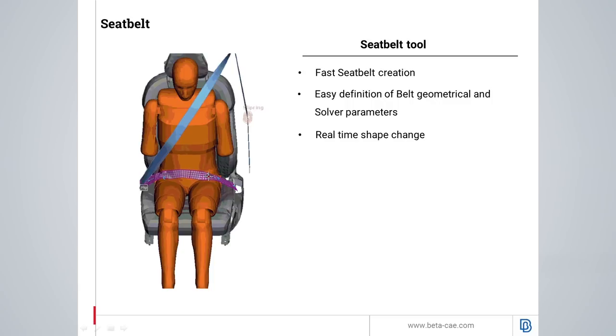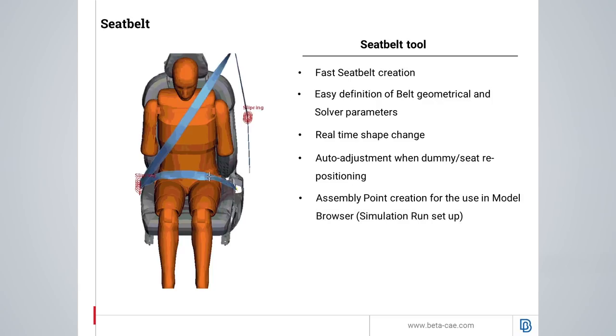Moreover, since the dummy and seat are moved, the seat is automatically adjusted to the new position. Finally, assembly points are being created in the anchor areas in order to be used in the model browser and then during the simulation run.